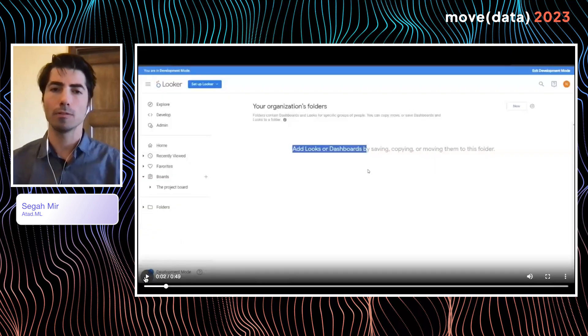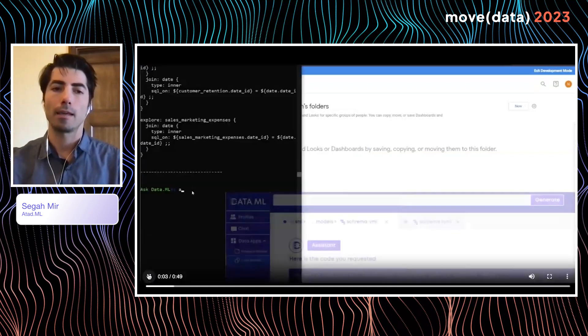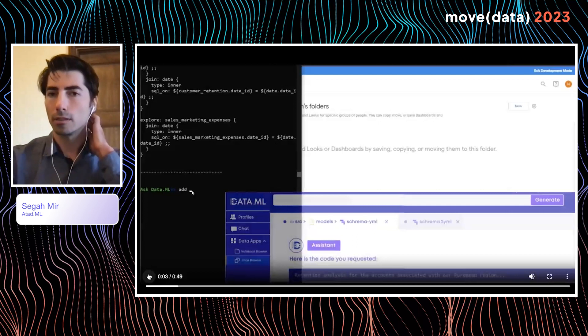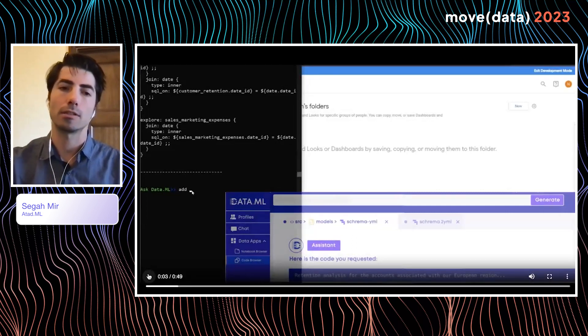So imagine you have a dashboard or you're trying to build a dashboard. In this case, we're doing this in Looker, and you would like to have a bunch of SaaS metrics, maybe something for your CFO or Chief Operating Officer. What we're going to see on the left here is us basically typing in very simple instructions such as add churn or add MRR, and the AI behind the scenes will actually generate a lot of code to power the data model for those metrics.